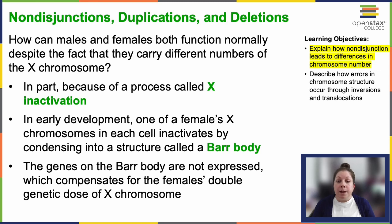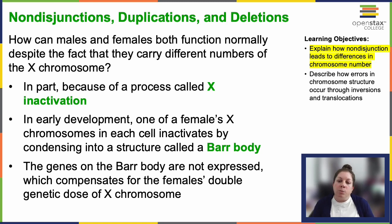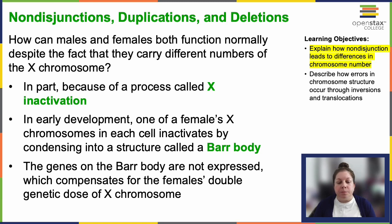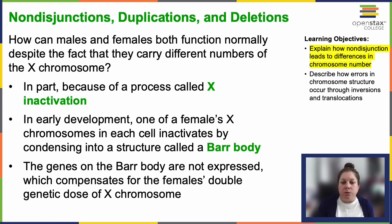Human females and males can function despite carrying different chromosome numbers for X. This is largely due to X inactivation. During early development, one X chromosome in each cell inactivates, creating what's called a Barr body, and the genes on the inactive X are not expressed. The particular X chromosome that is inactivated is random, but all descendant cells will share the same inactivation. This process compensates for the double X chromosome dosage in females. Males who only possess one X chromosome don't experience that — they don't have Barr bodies.